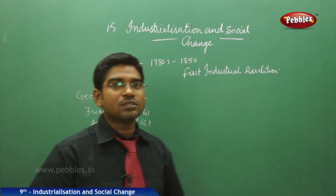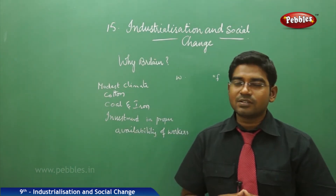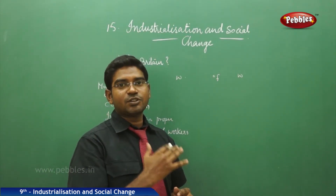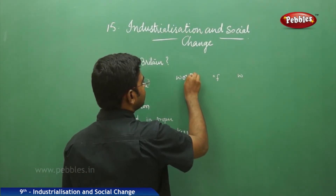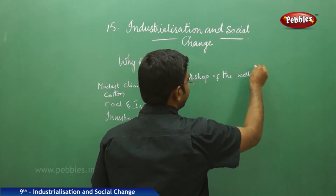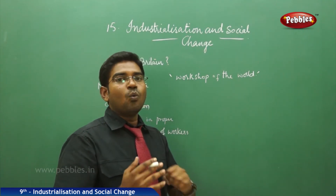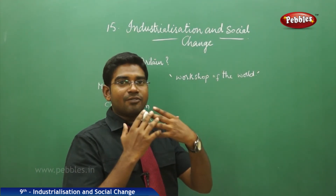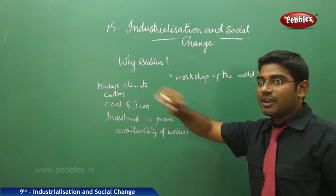Why should we focus only on Britain? The First Industrial Revolution started from Britain in the period from 1760 to 1850. Britain is considered the workshop of the world because most of the inventions, discoveries, and investments made in industries were seen to be fruitful in British workshops, where every research was done clearly and effectively so that it reached a successful outcome.